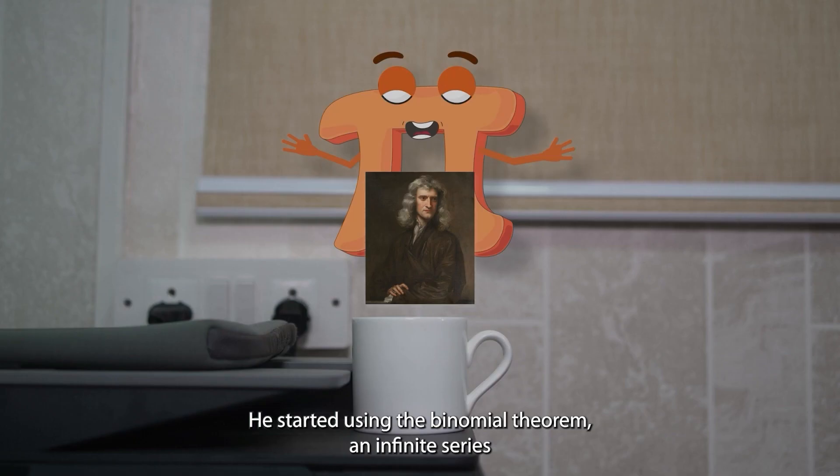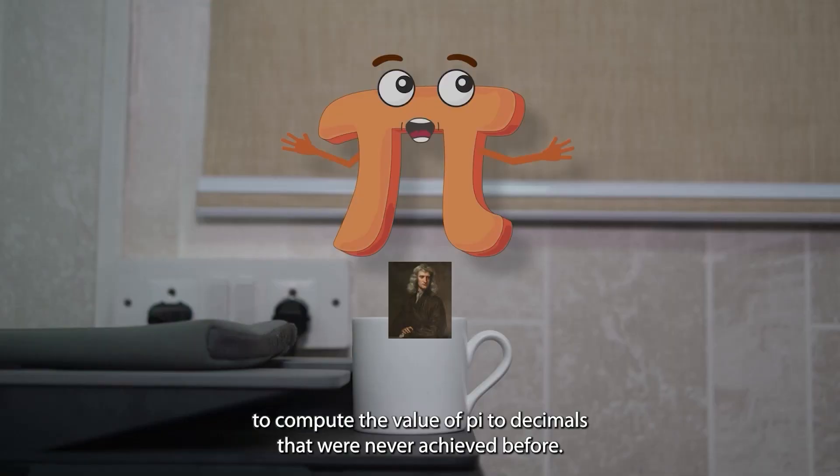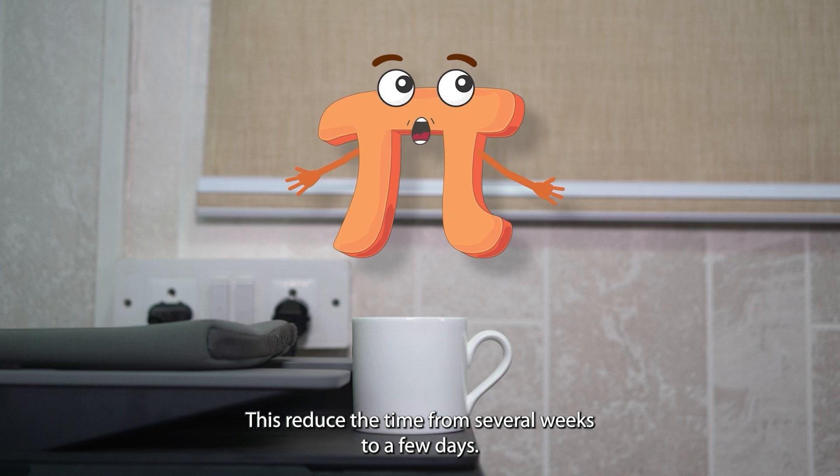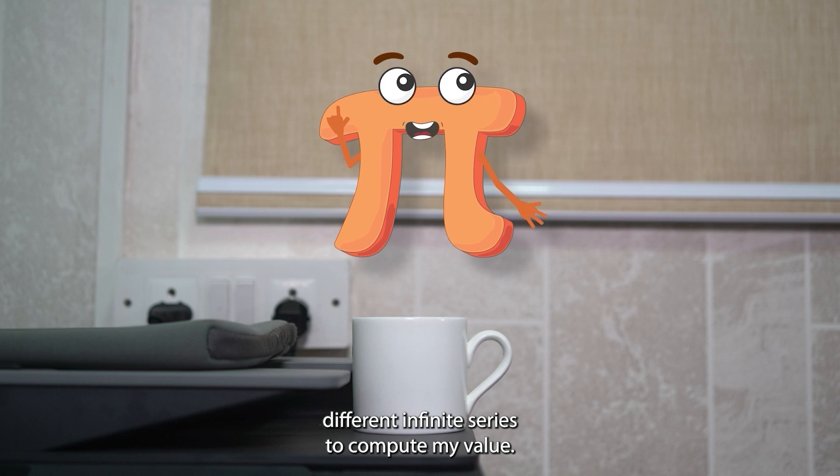Then Newton came in. He started using the binomial theorem and infinite series to compute the value of pi to decimals that were never achieved before. This reduced the time from several weeks to a few days. Many scientists use the same method but different infinite series to compute my value.